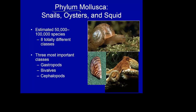Remember, phylum mollusk, and then class would come right under phylum — so it's kingdom, phylum, class. Of these eight classes, we see huge differences in body structure and design. We see differences in habitat, eating, reproduction, all of those major things.